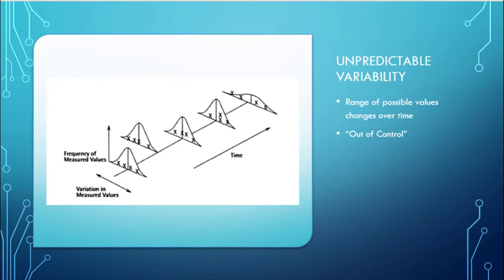This chart is showing a process where variability is not predictable. Over time, we look at groups of whatever it is we're measuring, and for each group we plot the frequency of the values. You can see that over time, the range of those possible values is changing — that means our variability is not predictable. We call a process where variability is not predictable an out-of-control process.